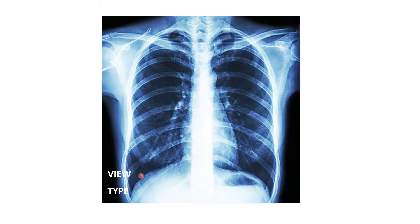Now why do we take the PA view over the AP view in the X-ray of a thorax? The first reason is the position of the patient in the PA view. In the PA view, the heart of the patient lies nearer to the X-ray plate at an optimum distance of six feet. So accurate assessment of cardiac size is done due to minimum magnification, and the heart shadow appears as it is with no magnification.